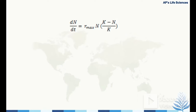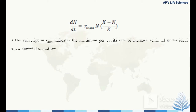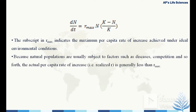This gives the logistic equation: dn/dt = r_max · N · (K − N)/K. The subscript on r_max indicates the maximum per capita rate of increase achieved under ideal environmental conditions. Because natural populations are usually subject to disease and competition, the realized r is generally less than r_max.